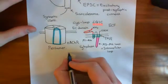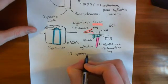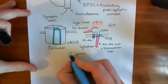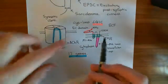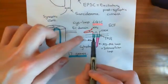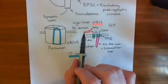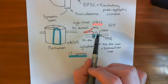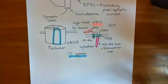Instead, we have 17 genes which code for subunits of the nicotinic acetylcholine receptor. All of these 17 genes will have a slightly different sequence of organic bases and therefore will code for a protein with a slightly different sequence of amino acids. However, they will all still form this same membrane-spanning topology, and they can all form a fifth of the nicotinic acetylcholine receptor.